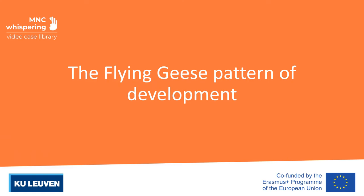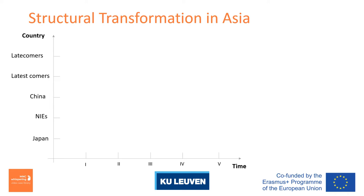The flying geese pattern of development was originally coined by Akamatsu in several Japanese articles in the 1930s and presented to the world in English after World War II in two seminal articles in 1961 and 1962. The paradigm suggests that countries will develop as part of a regional upgrading process where the production of goods would continuously move from economically more advanced countries to economically less advanced ones. The countries in a region could be considered to be aligned successively behind the more advanced industrial nations in the order of their different stages of growth in a wild geese flying pattern.